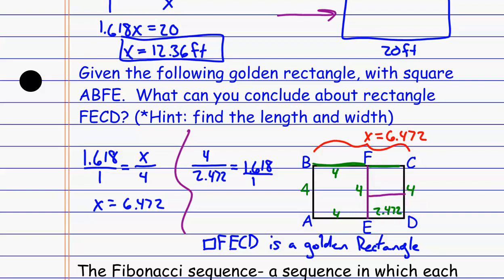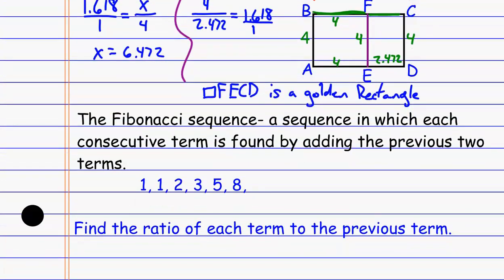The last thing we're going to look at in this lesson is a neat connection to the Fibonacci sequence, which relates back to the golden ratio. Fibonacci sequence is something that appears in a lot of different places — naturally and in lots of patterns across different math concepts. It just kind of pops up in random places. A man named Fibonacci discovered it, and it's basically built by finding each consecutive term by adding the previous two terms together.